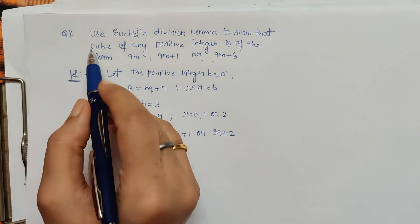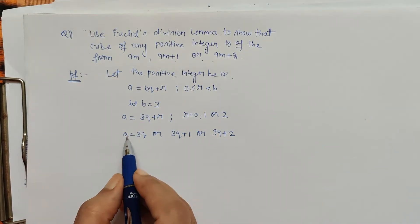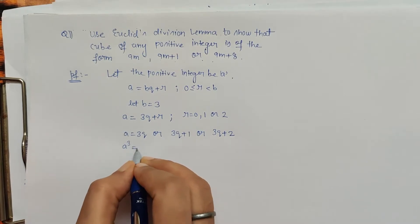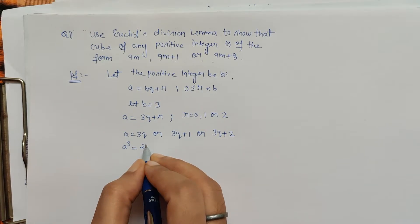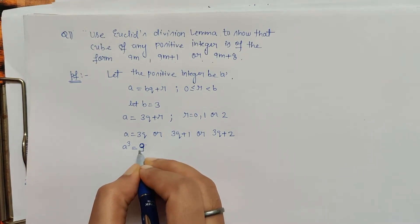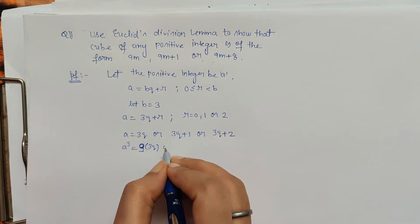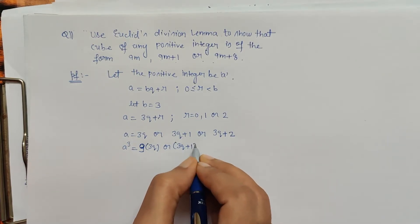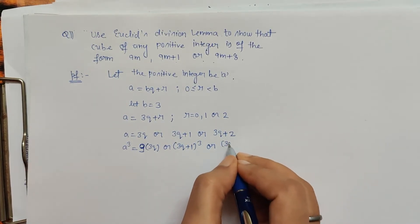The change from the previous question is that here we are dealing with the cube of any positive integer, meaning we have to cube each case now. When we cube 3Q, we get 27Q cubed, which definitely has 9 as a factor. We can see 9 and 3Q remain. This way we can write each term, and we have to cube the other terms also. Let's write them in expanded form.